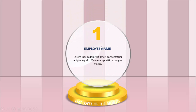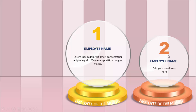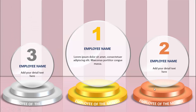This is the employee of the month, made in gold color with a glass effect. You can put the number one, employee name, and some detailed text, and I've added a shadow effect. When I click, the bronze trophy will come where you can put the employee name and some detailed text, and then comes the third one which is silver.